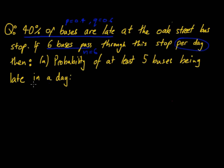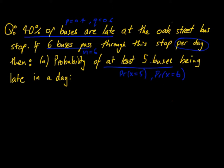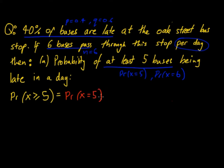The probability of at least five buses being late means we need P(X = 5) plus P(X = 6), because if six buses are late, that still satisfies at least five. There can be no more than six buses being late, because only six buses pass through the stop per day.